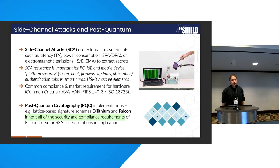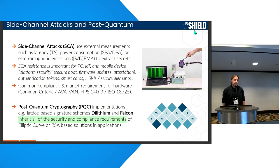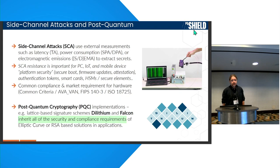To recap, side-channel security is something that in the industry we have to implement — it's a business requirement. It's also a compliance requirement. So if we do hardware implementations, we need to meet all of the security requirements that Elliptic Curve or RSA modules had. Basically, in hardware applications like platform security — protecting your boot process, firmware updates, attestation — and devices like authentication tokens, wallets, and smart cards that require these properties. When we are selling these hardware products, the customer needs to be convinced that they are actually secure.